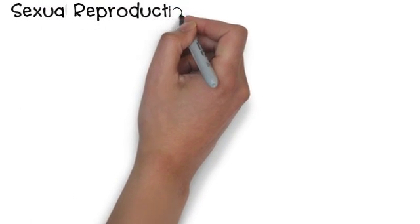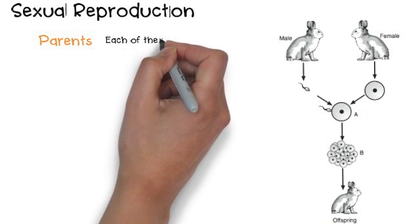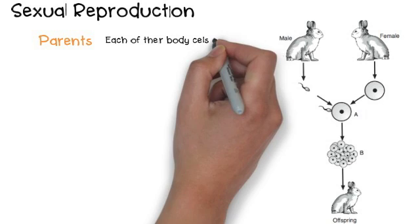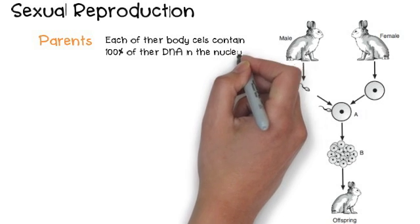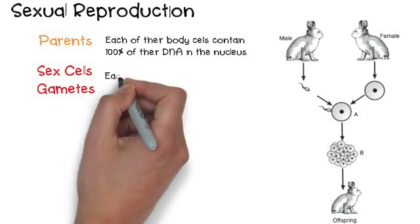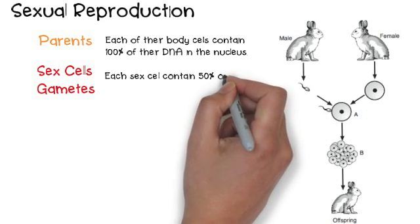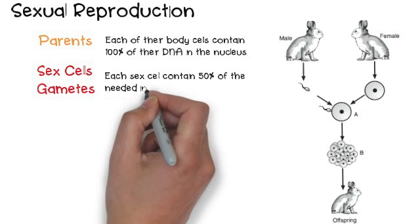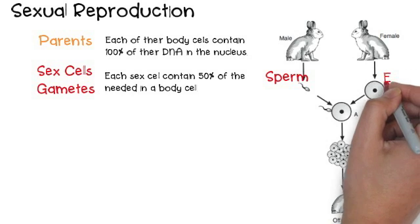Sexual reproduction requires two parents and they make a non-identical offspring. Each of their body cells has a nucleus which contains 100% of the DNA. But in their testes, ovaries, and gonads, they create these things called sex cells. And each sex cell only contains 50% of the DNA needed in a body cell to make an offspring. And these sex cells are called the sperm and the egg.